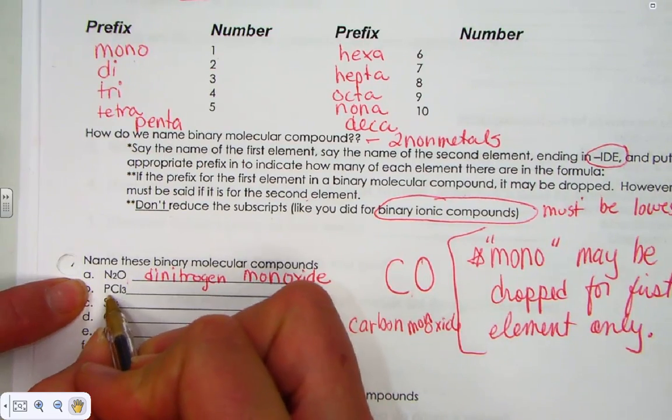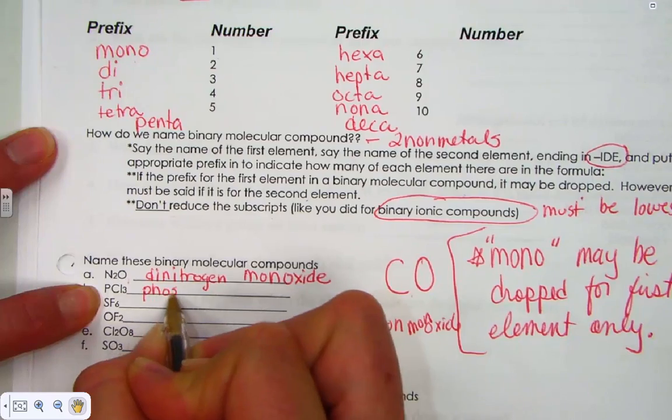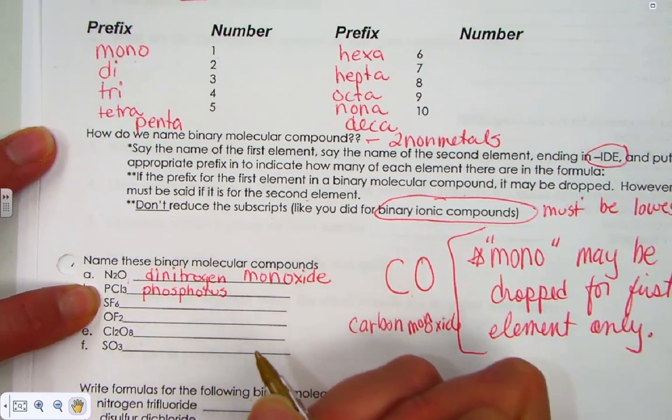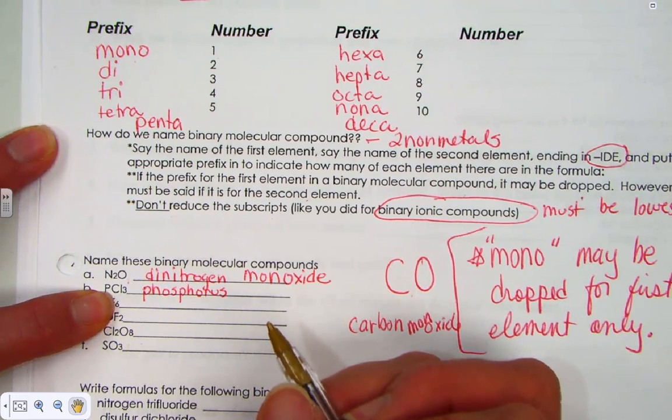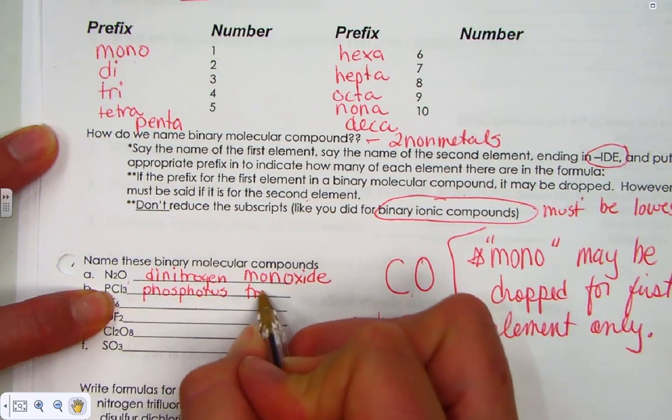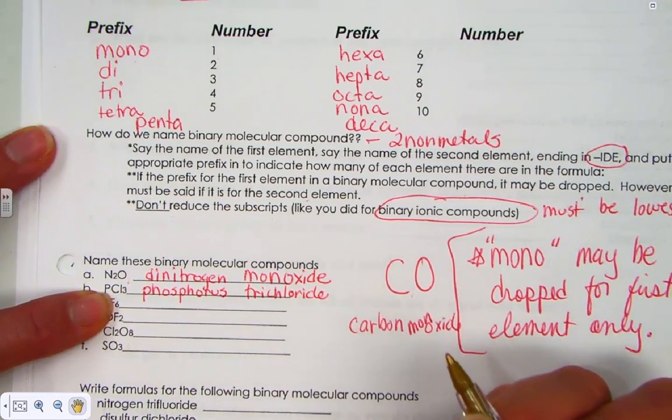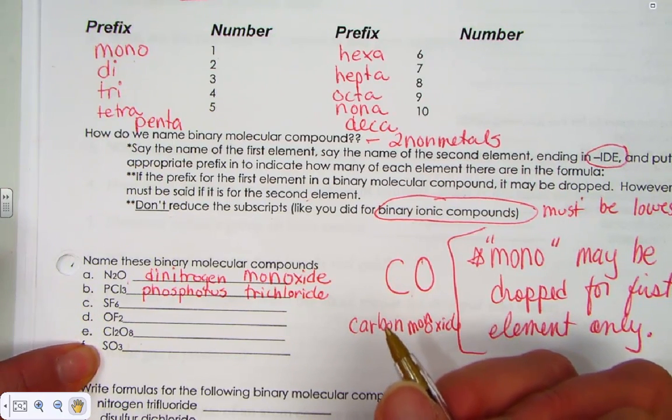PCl3. Notice the first element is just the number one. So I'm going to choose not to say mono and just simply write its name. Phosphorus. Cl ending in ide is chloride. And the prefix for the number three is tri. Trichloride. Pause the video right now and name the rest of these compounds.